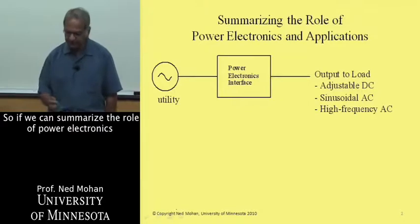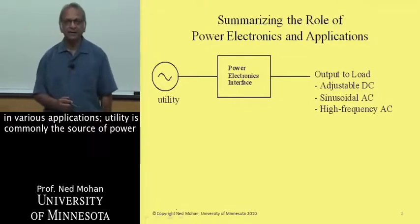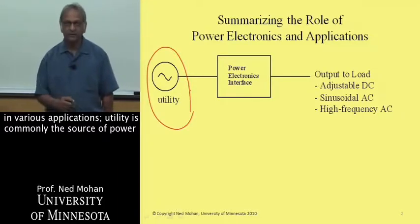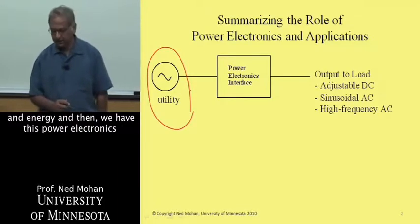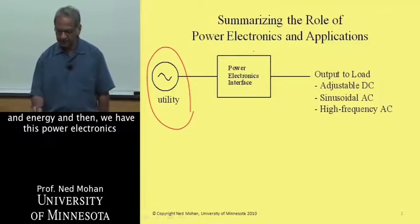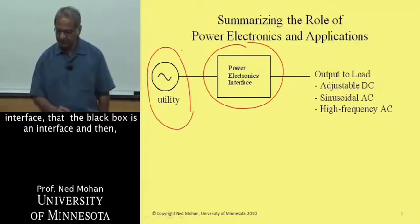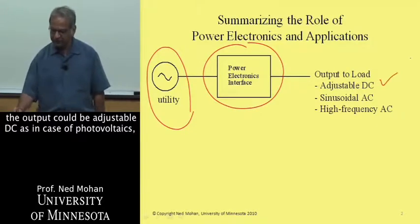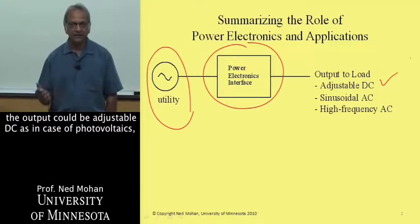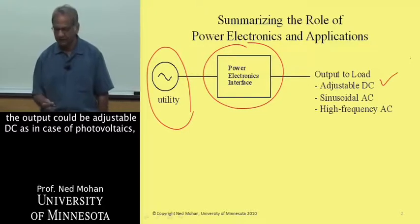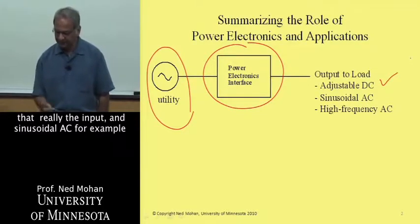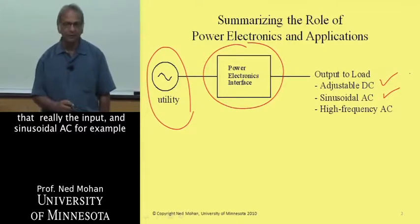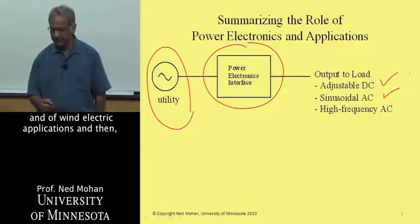So if we can summarize the role of power electronics in various applications, utility is commonly the source of power and energy. And then we have this power electronics interface as the black box, as an interface. And then the output could be adjustable DC, as in case of photovoltaics, that's really the input. And sinusoidal AC, for example,